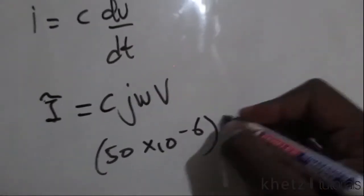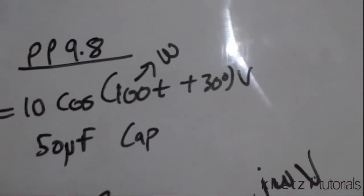Then we have j, then we have ω which we're going to take from this equation. In the general form of a sinusoid, this is where we find our omega, which is ω. We are going to substitute this value of 100.